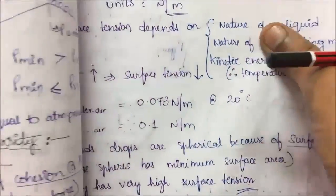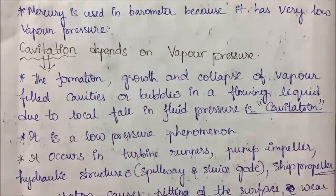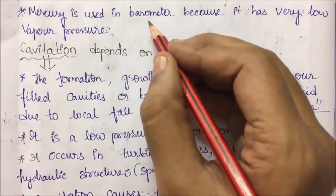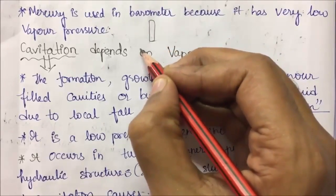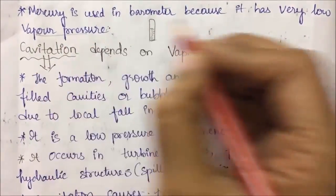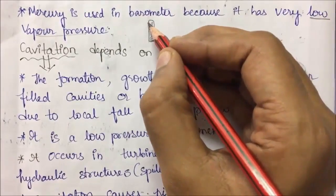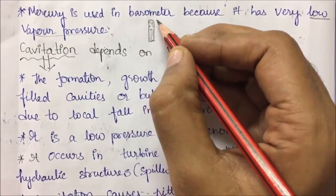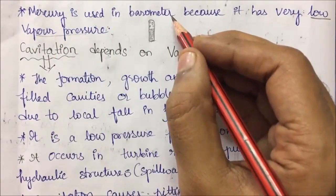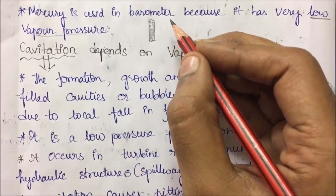Mercury is used in barometers because it has very low vapor pressure. Low vapor pressure means mercury prefers to remain in liquid form — very few mercury molecules tend to become gaseous. This is the main advantage: mercury does not change to the gaseous state as easily as water does.